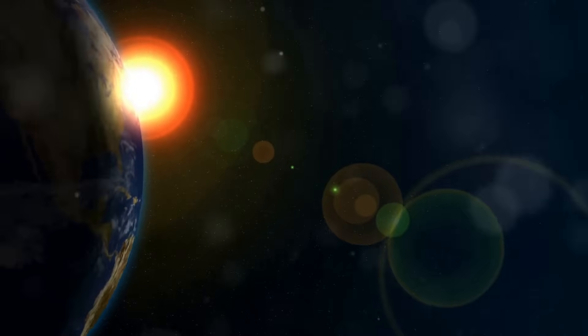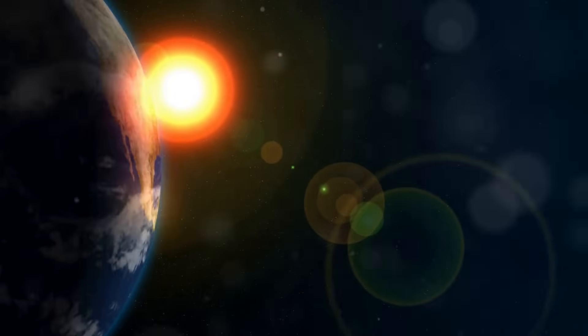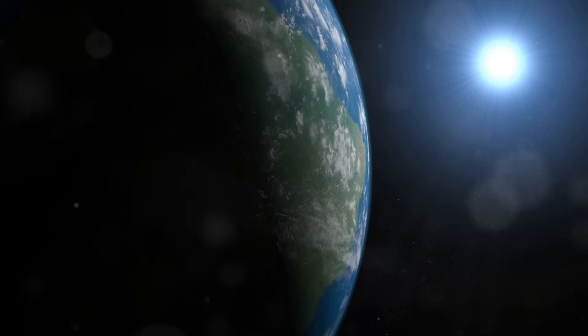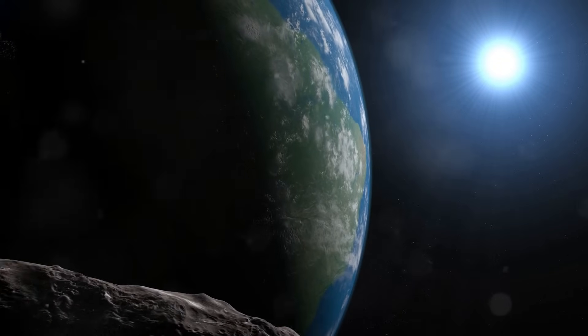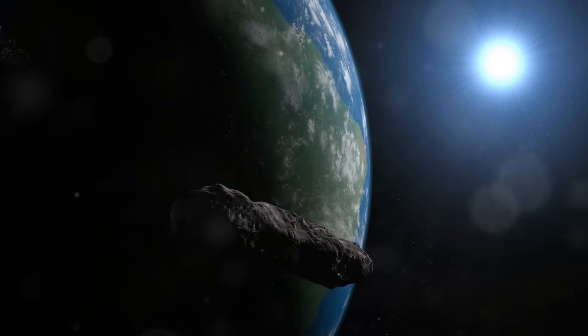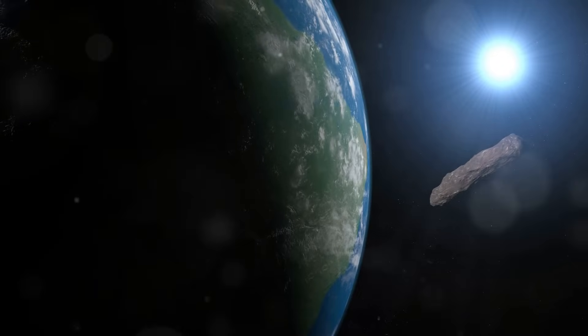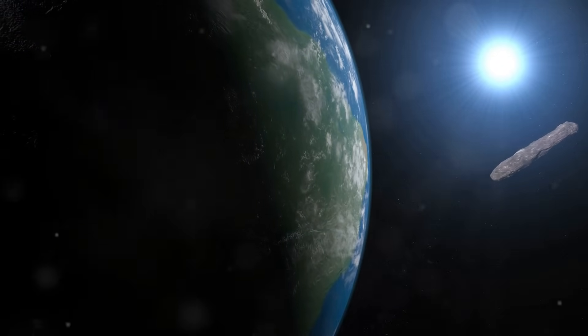Gravity, the invisible force that governs the motion of celestial bodies, began to pull this material together. Over time, the center of this cloud grew denser and hotter, eventually igniting nuclear fusion. This process gave birth to our Sun, a brilliant star that would become the heart of our solar system, providing light and warmth to the planets that would soon form around it.